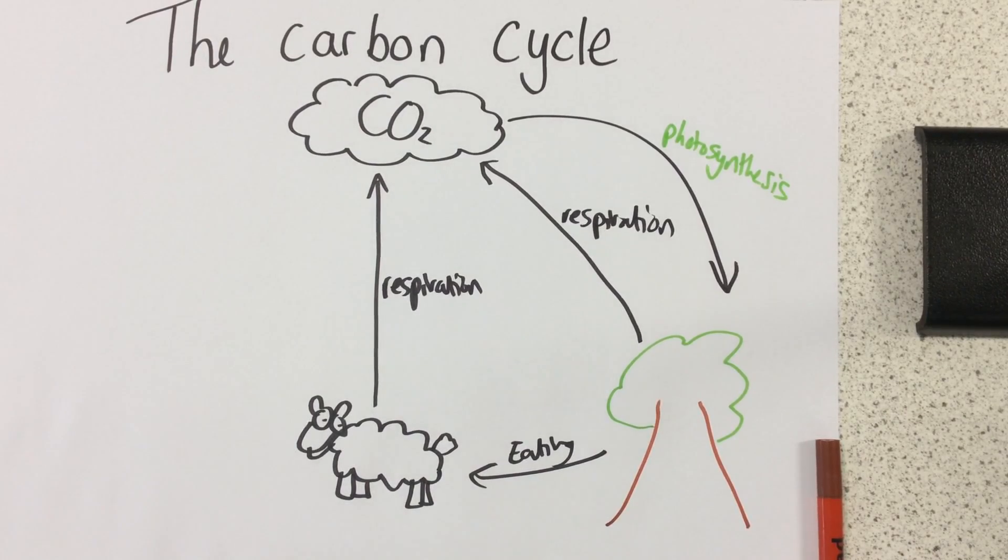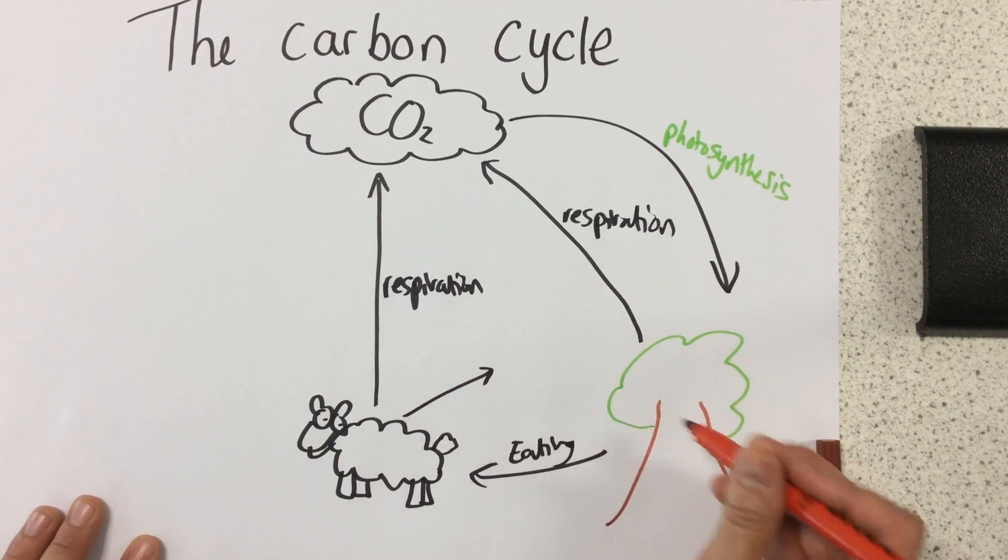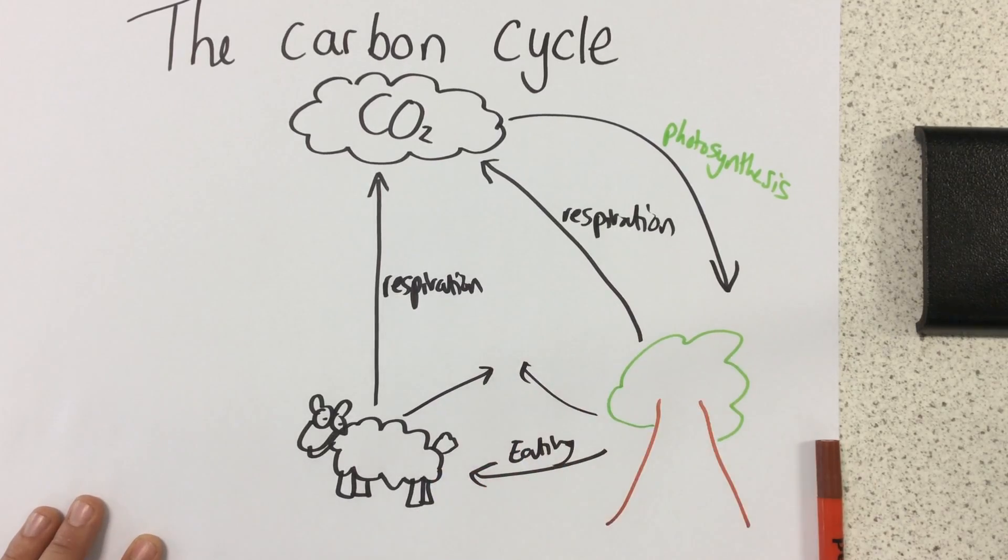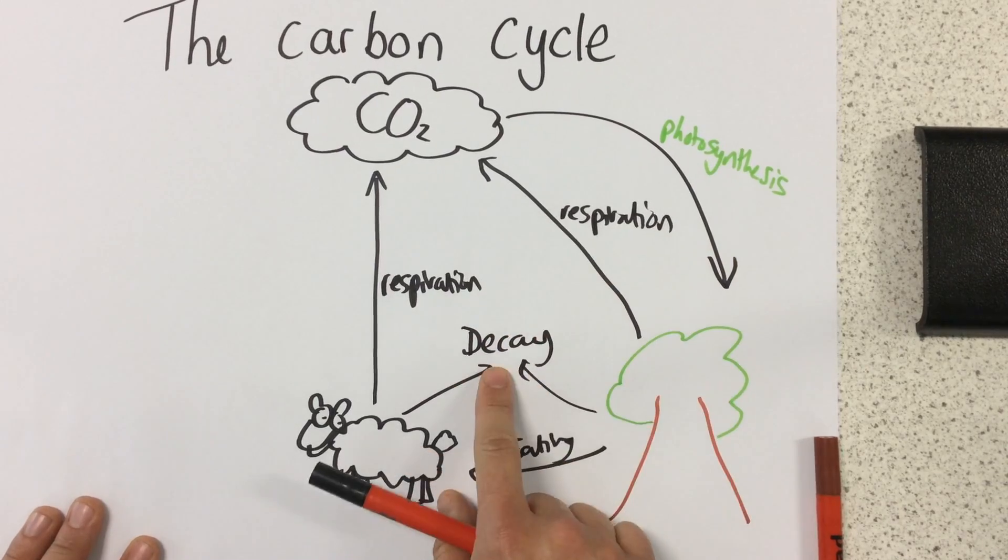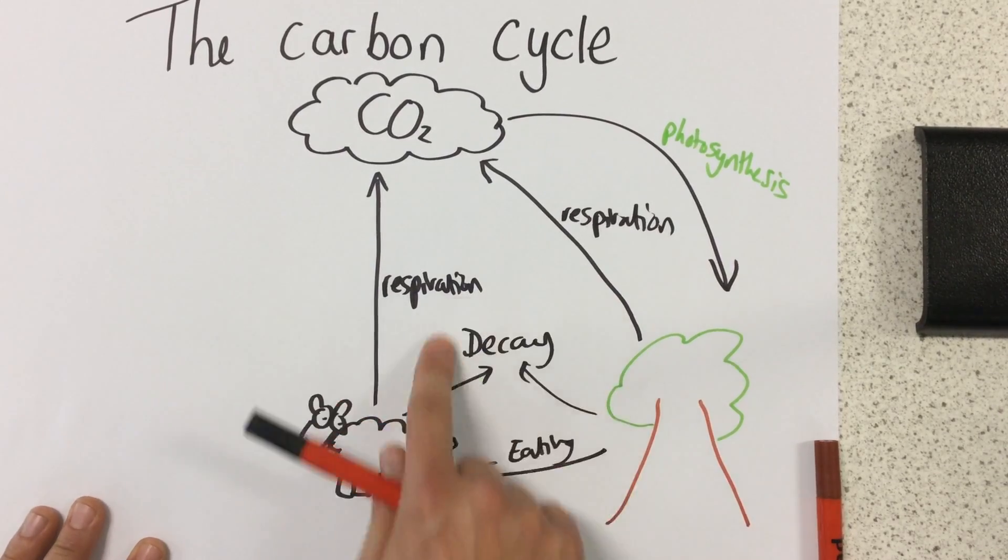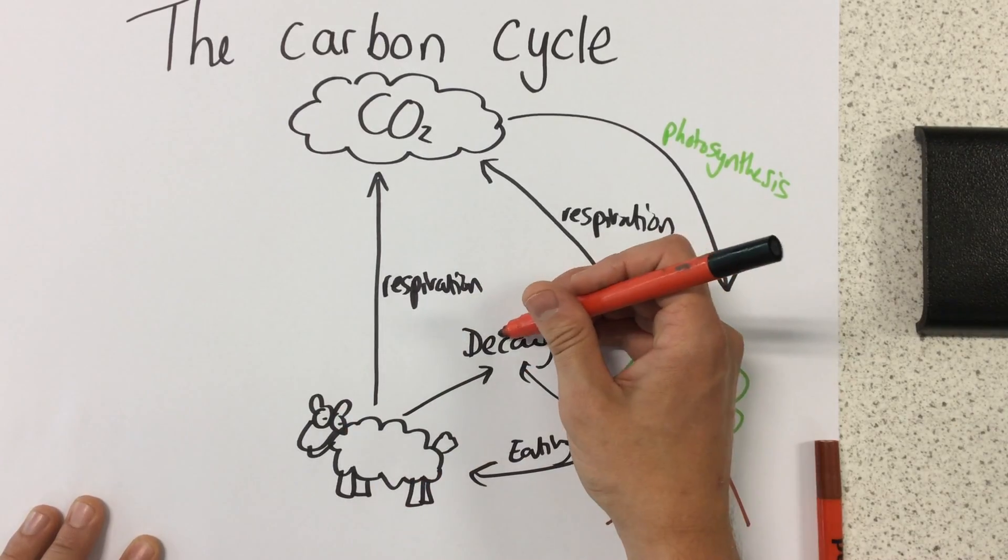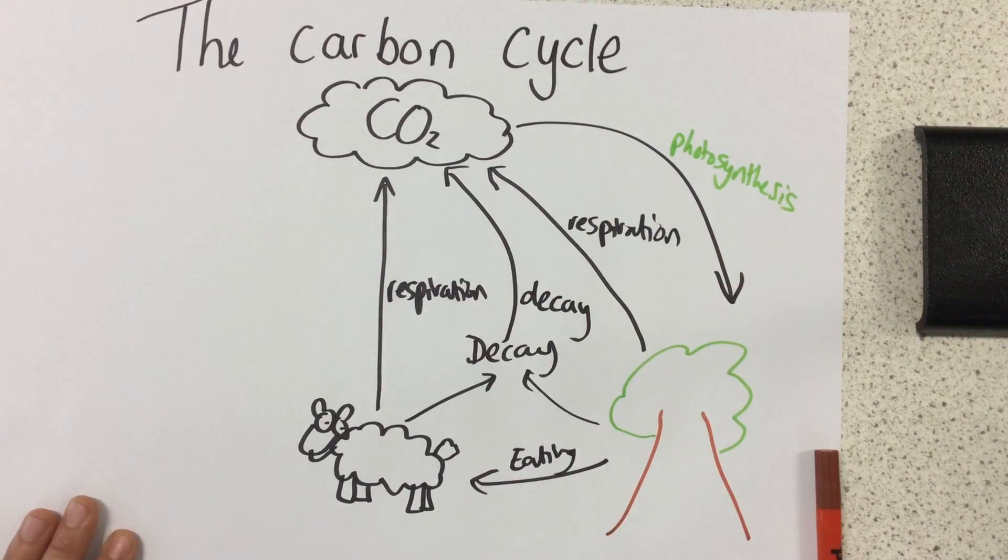What we're going to think of now is, it's quite sad, but some of these animals and plants, well all of them eventually will die and they will decay. So as they're broken down by microorganisms, by bacteria and the such like, again carbon dioxide is released into the atmosphere.